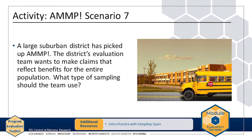A school within a large suburban district has implemented AMP, and now the entire district would like to implement the program. The district's evaluation team wants to make inferences about the benefits of the program for the entire district population. Since AMP has been scaled up and the team wants to generalize to the entire district, and particular characteristics of schools, teachers, or students do not need to be proportionally represented, the most applicable sampling type is simple random sampling. It is still important to verify the sample — for instance, examining whether the proportion of students by race and ethnicity is representative of the school district.